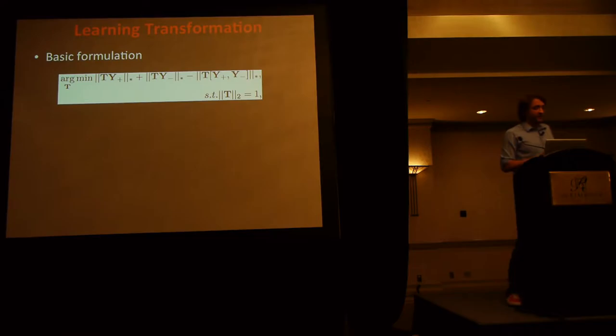How do they achieve this task? The idea is to solve this optimization problem in which t is the transformation, and y plus and y minus are matrices which have in their columns different data points. The three terms here are the nuclear norm, which is the sum of the singular values of the matrix. Here the matrices are the transformed data points, and it's known that the nuclear norm is a convex relaxation of the rank. So, if we look at the first two terms in this objective, what they are trying to do is minimize the rank of the representation on each class.